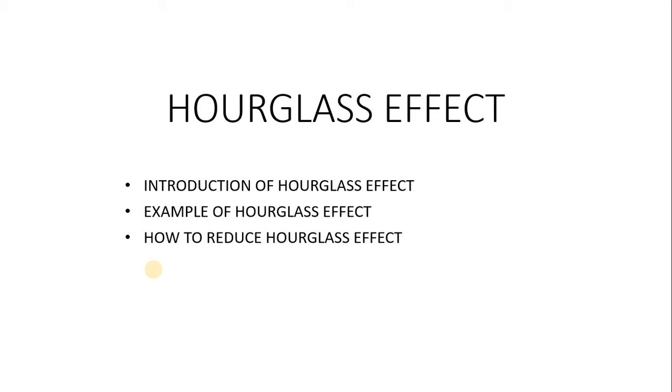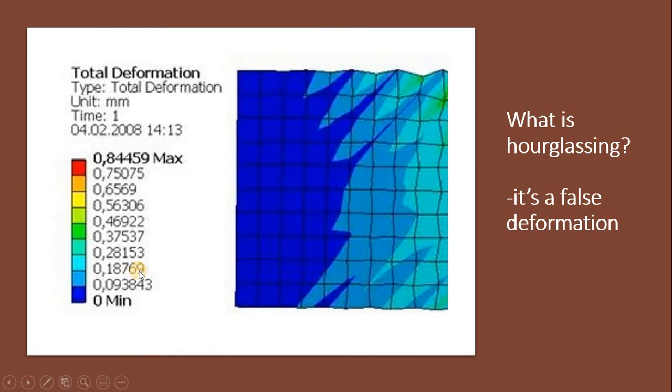What is hourglassing? Basically, hourglassing is a false deformation mode of finite element mesh resulting from the excitation of zero energy degrees of freedom. It typically manifests as a patchwork of zigzag or hourglass-like element shapes.